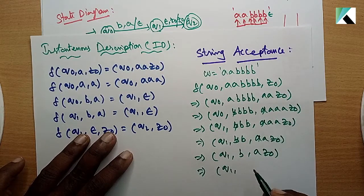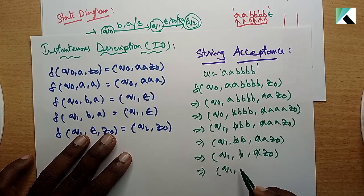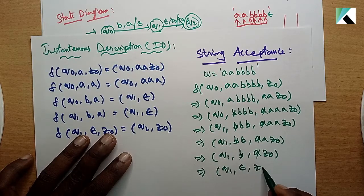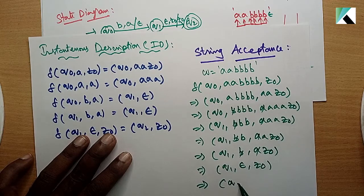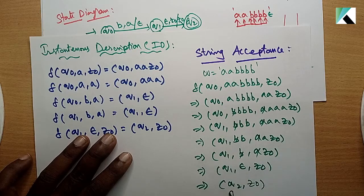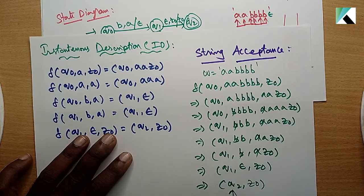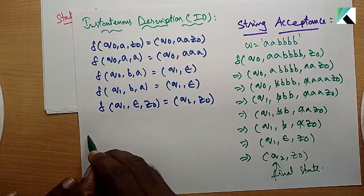Again q1, these two are cancelled. Epsilon remains - no more input. q1 epsilon with z0 moves to q2. Final stack symbol is z0. This is the final state. So conclusion: